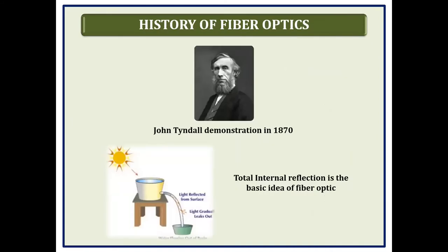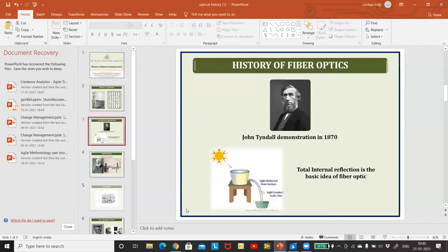In 1870, John Tyndall gave a crucial demonstration. We knew that light travels in a straight line, but he demonstrated using a bathtub with an outlet filled with a very dense liquid: when sunlight fell on the liquid flowing out, the light followed the path defined by the liquid flow. This showed that light could be bent — it was not necessary for light to travel in a straight path to reach any point. Let me show you a video of this demonstration.